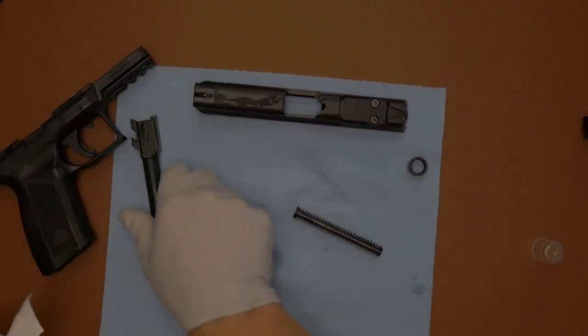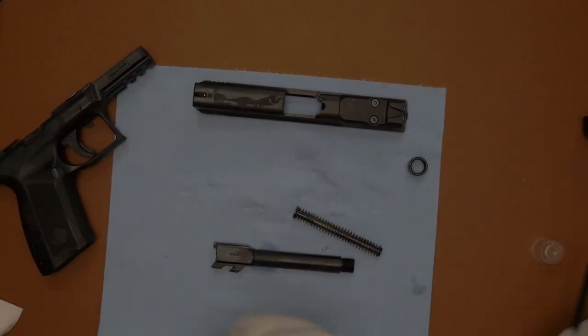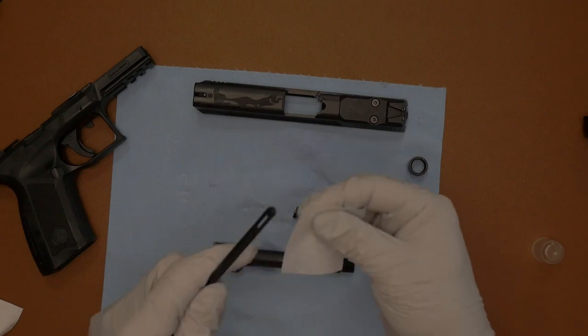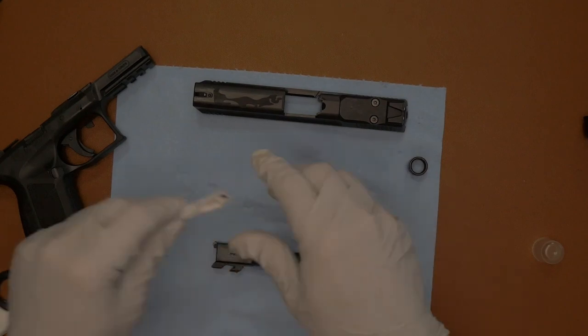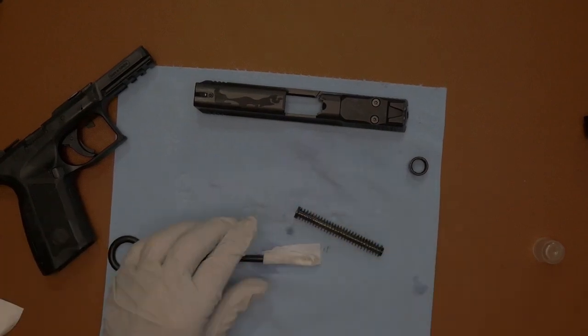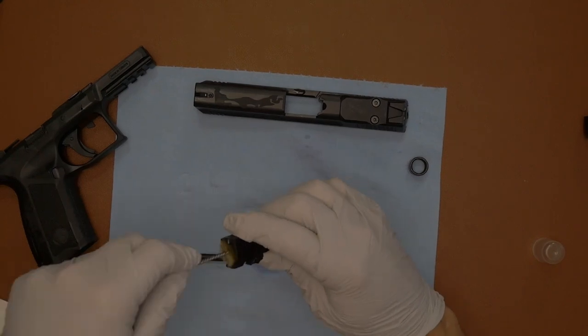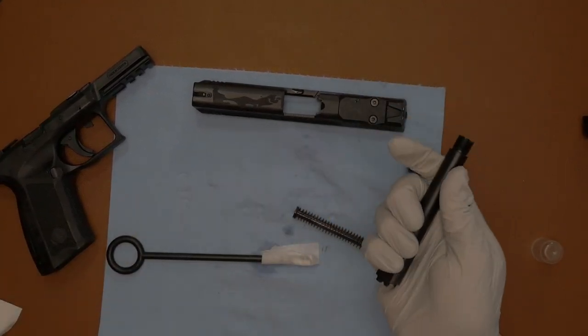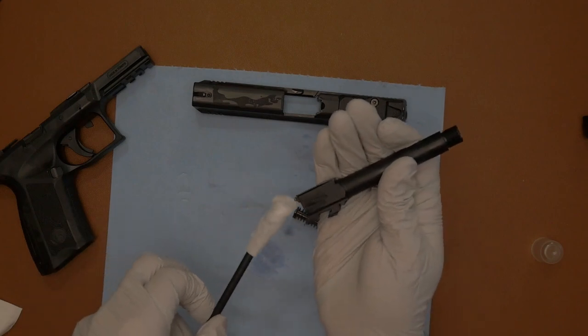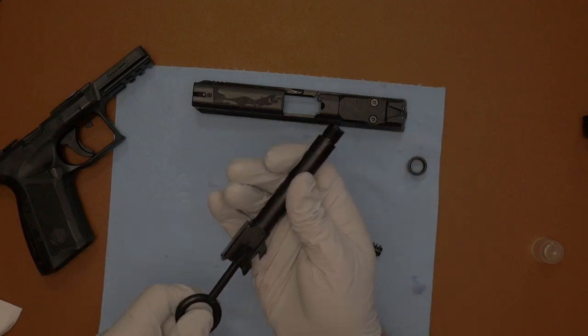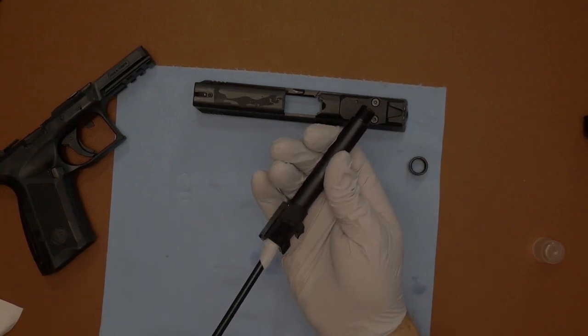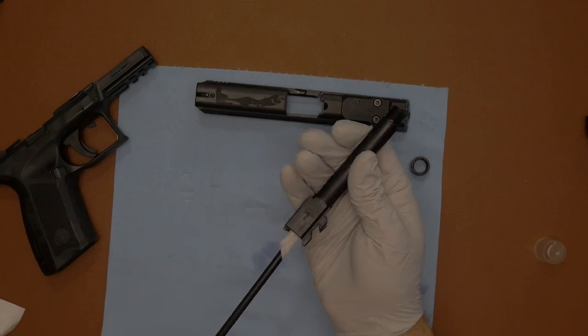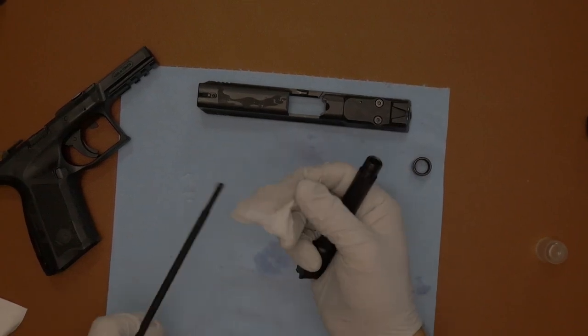Then when it comes to the barrel, I will take the jag, put a patch on, got the patch. And then of course, let me do this first, take the bore brush, run it through a couple of times. And then I would take the jag, run that through, get in the excess cleaning. And as you can see, it's pretty clean there.